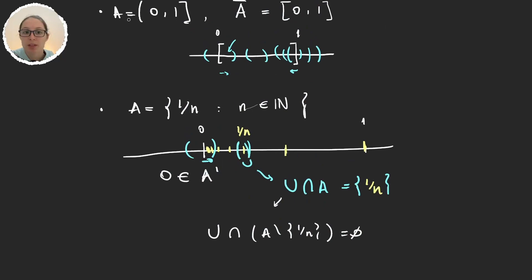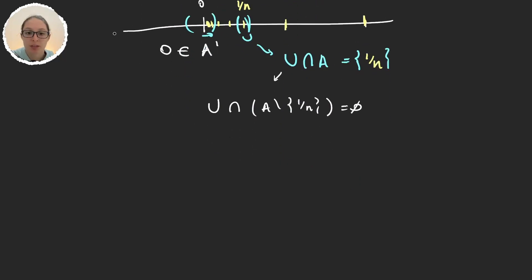For example we can take again this very first one, when A is (0,1). And we can think about ℝ_u, so the real numbers with the upper limit topology. This is the one generated by all the sets of the form [a,b), closed in a, open in b. So now I ask you: Is 0 a limit point of A?